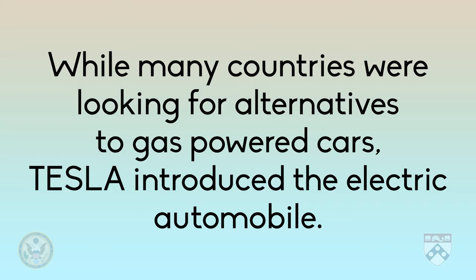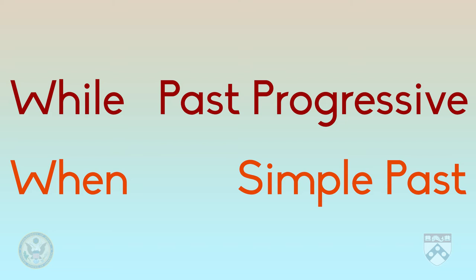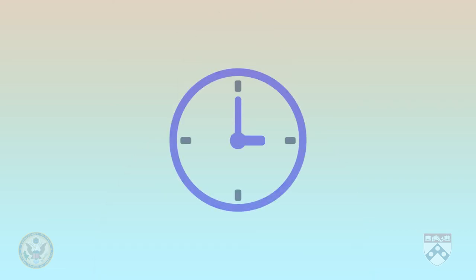Here's another example: while many countries were looking for alternatives to gas-powered cars, Tesla introduced the electric automobile. Notice that 'while' is often used to introduce the past progressive, and 'when' is often used with the simple past. And remember, when you choose between past simple and past progressive, think about which action takes the longest — that action will be in the past progressive form.